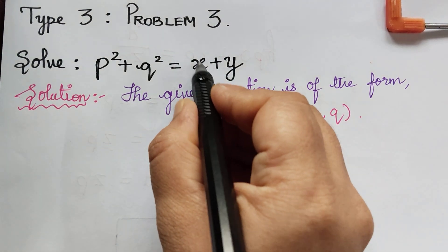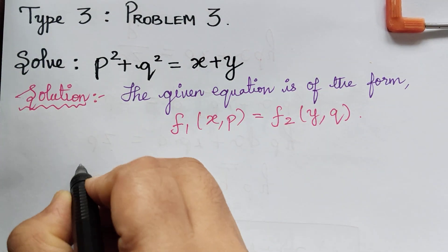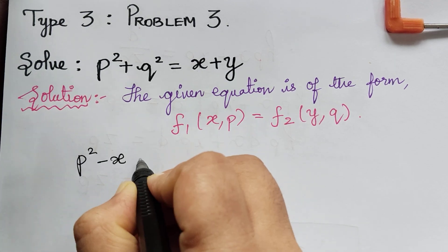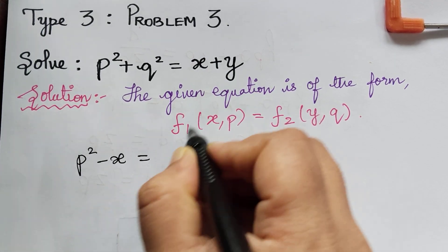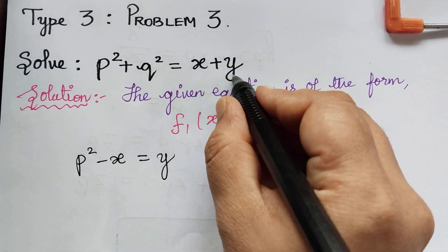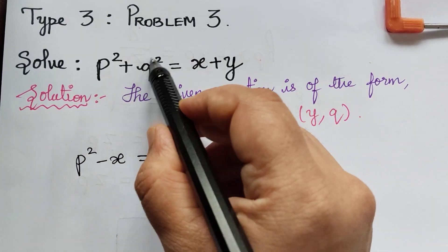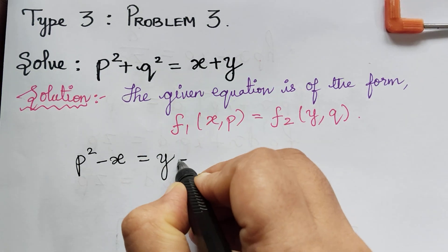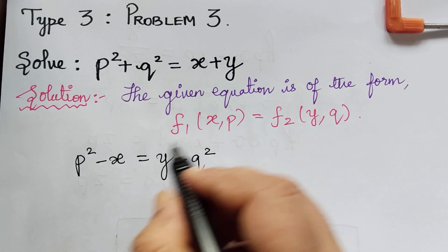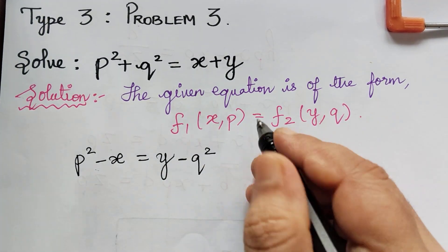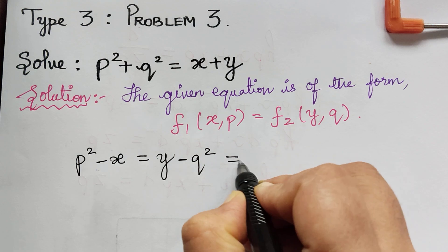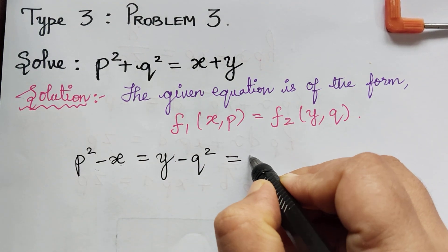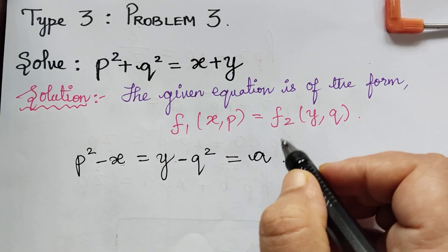Bringing x to the left, we will have p squared minus x is equal to y on the right. Taking q squared to the right, it becomes negative q squared. Now, these two equations can be equated to a constant a.